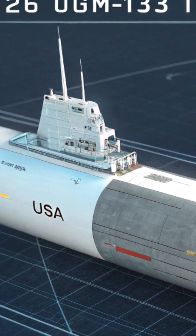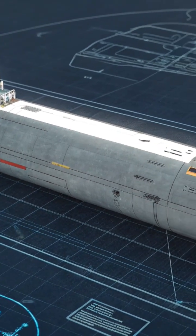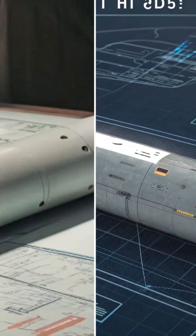Missile ka 3D model bhi table ke upar rakha hua hai. Is model par ek exact red target reticle bana hai jo is missile ka precision aur focus ko represent karta hai.